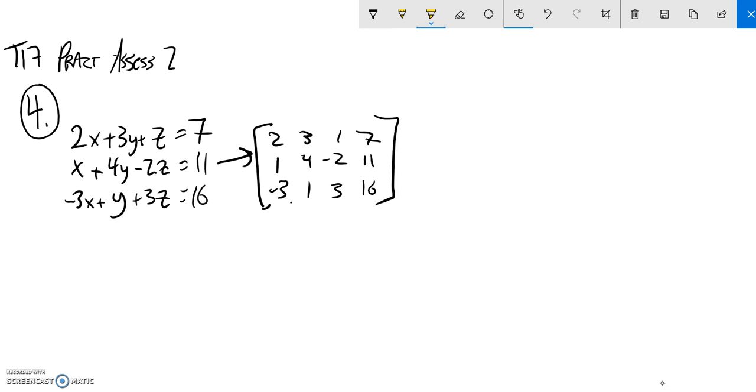Now what I'm going to do is make some zeros. I think it'll be pretty easy to make zeros here, and I can use that 1 to get rid of the negative 2 and use that 1 to get rid of the 3. So, first thing I'll do is 2 times the first row plus the second row, throw that into the second row.